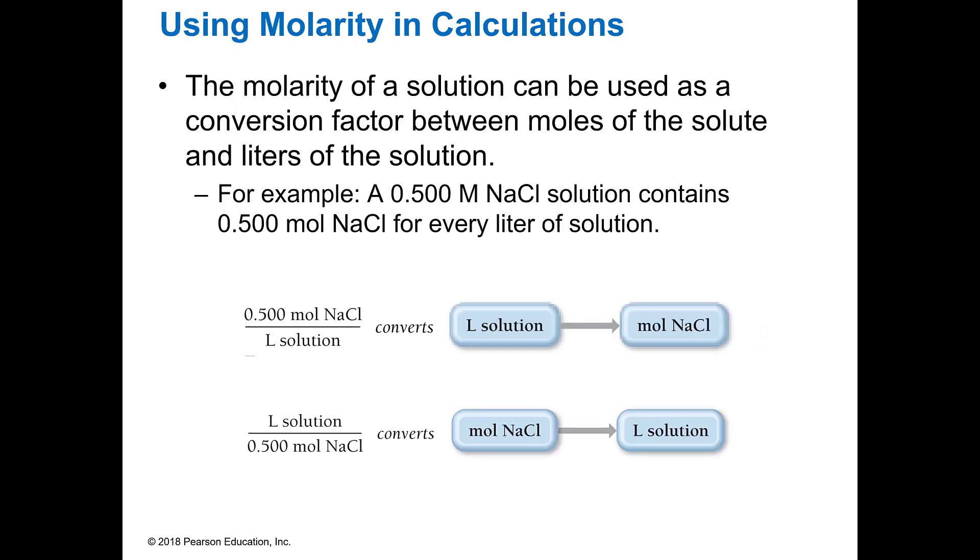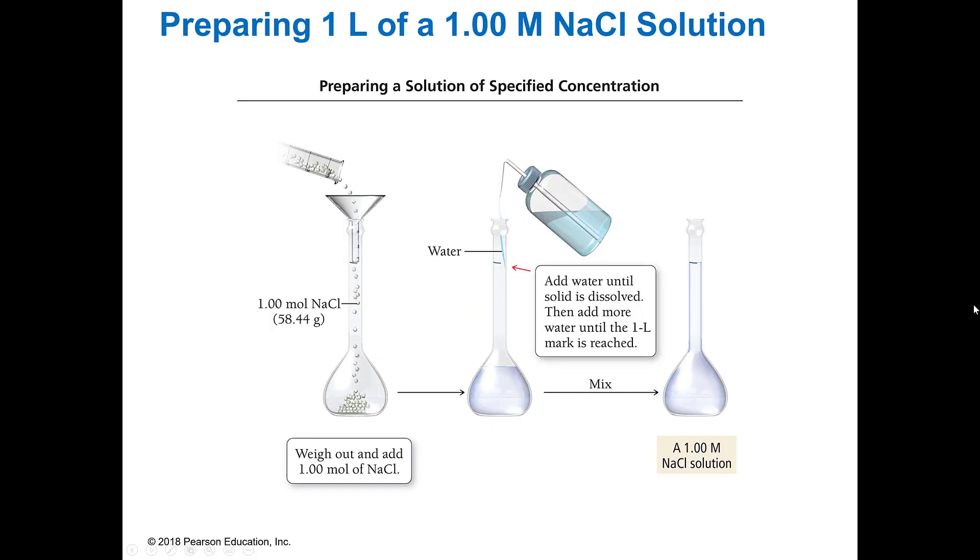So because molarity is so many moles of something per liter, we can use that as a conversion factor when we are trying to convert things. I can go between liters and moles or moles and liters when I'm trying to figure something out. For example, if I have a 0.5 molar sodium chloride, I know that for every one liter of solution I've got 0.5 moles in there. So I can use that concentration to actually find out how much I have.